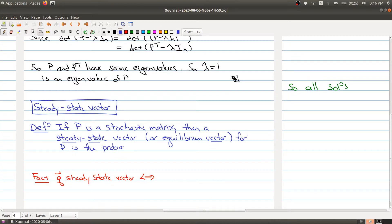It's the probability vector Q such that PQ is equal to Q. So it kind of makes sense why we would call it a steady state because multiplying that vector Q by P doesn't change it. So it's a steady state, no change or equilibrium. Everything stays the same.